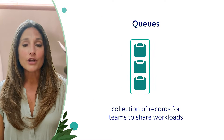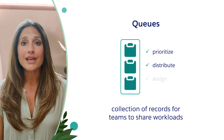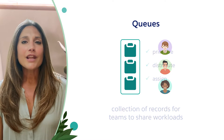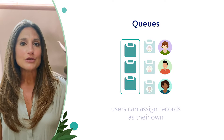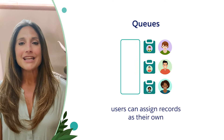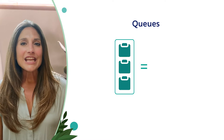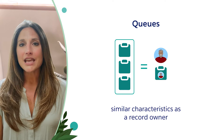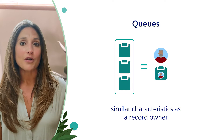Queues are a collection of records to prioritize, distribute, and assign records to teams who share workloads. They are like holding areas where records wait for a user to pick them up and assign them as their own. You can think of a queue like a user because it shares some of the same characteristics as a record owner.